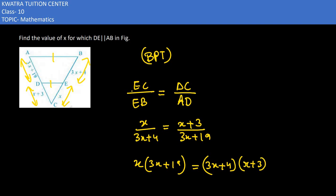Now on the left side you have to multiply it with both the terms, so it will become 3x² plus 19x. Right side we have 3x², then 3x times 3 will be 9x, then 4x, and the next value is 12.